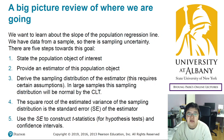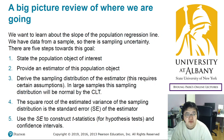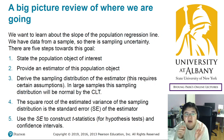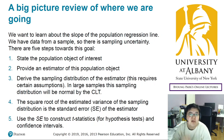Then we had to study how the estimator behaves and performs, and we needed to derive its sampling distribution. We learned some basic assumptions required to derive the sampling distribution: the conditional mean zero assumption, the IID assumption, and the outlier assumption — outliers should be rare. Then we derived the sampling distribution based on the law of large numbers and the central limit theorem.